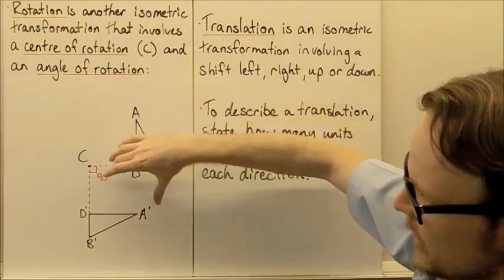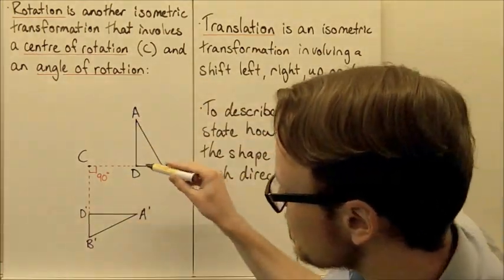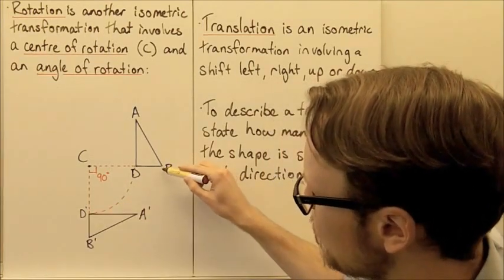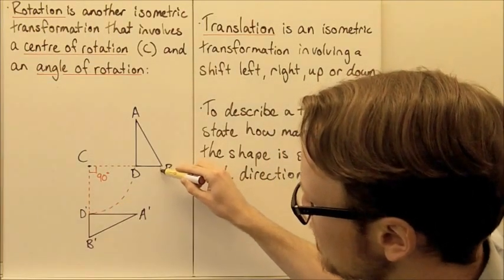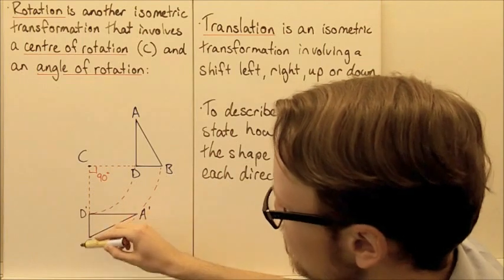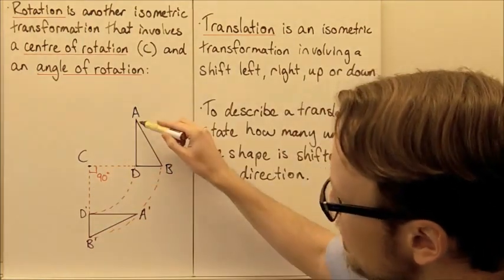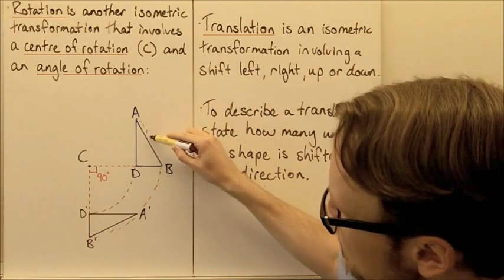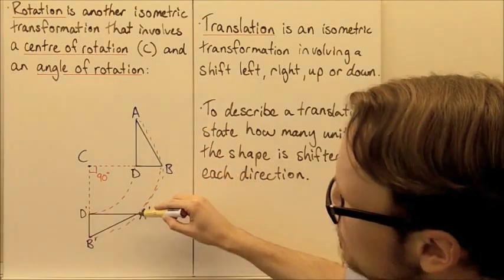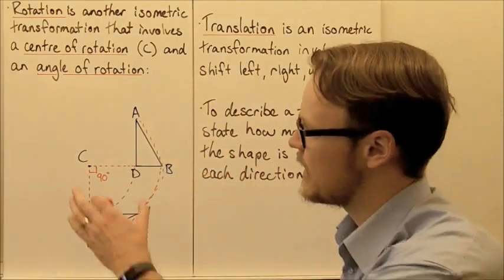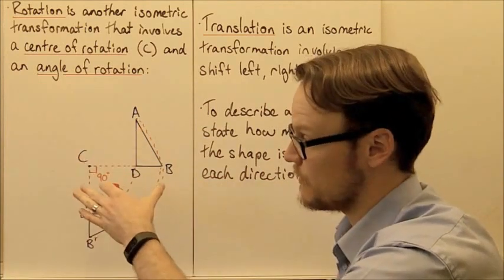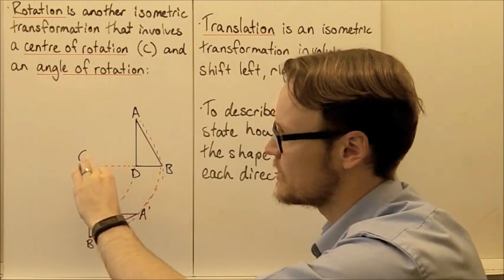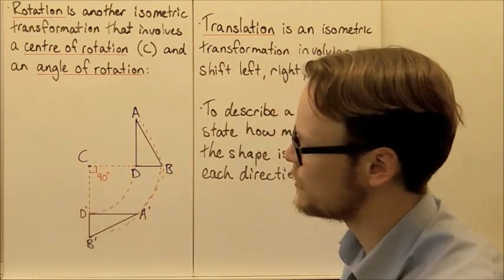As we rotate the shape around, each of these points travels in an arc around the centre. Each point travels a different distance, but they all rotate around point C through 90 degrees.